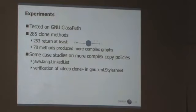We've actually conducted some preliminary experiments with a prototype of the implementation tested on a GNU class path. We found 285 clone methods here. The large majority of these actually could be verified by this prototype. They do respect the basic clone method that says that you can't just return a reference to what I gave you, the same reference as I gave you.